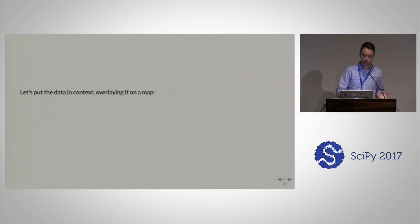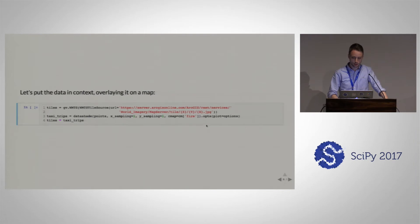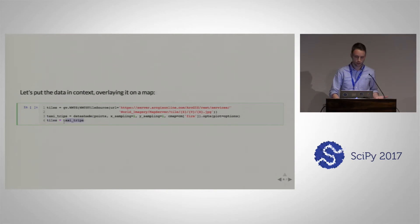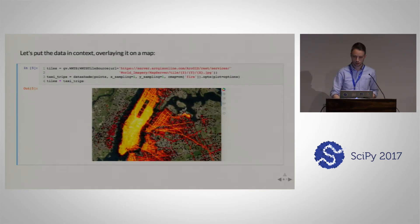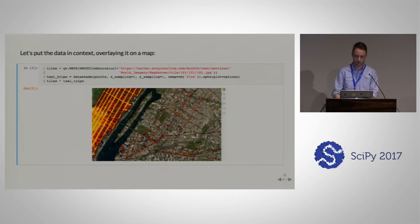Now we've visualized it, but maybe we want to put it into context — see where this data is actually situated. We know it's New York in this case, but maybe in other cases we don't. HoloViews has a geographic extension called GeoViews, which allows us to wrap tile sources very easily. We declare a tile server and then overlay the set of tiles with our taxi trips. We can do this really easily using the overlay operator, and we now see our plot situated on the actual map of New York. Everything is interactive, smooth, and quick.